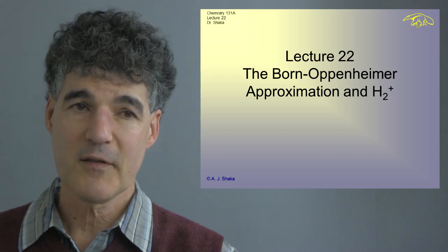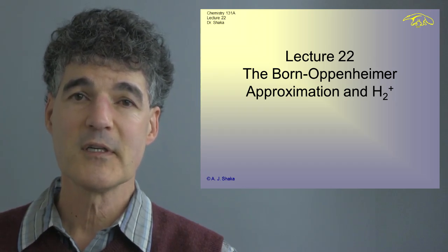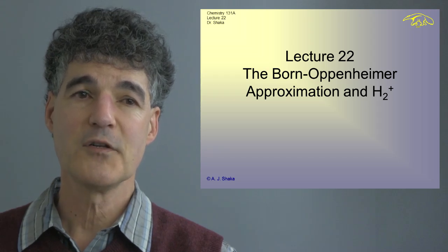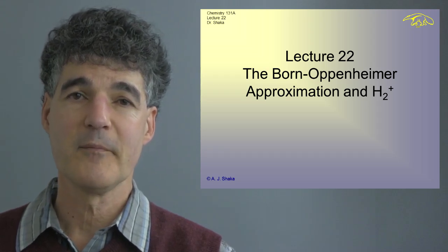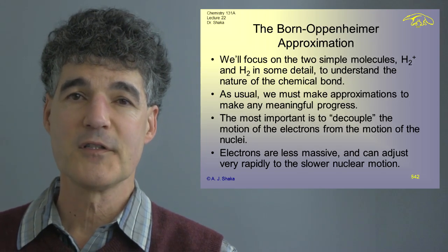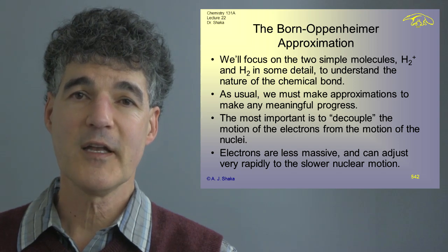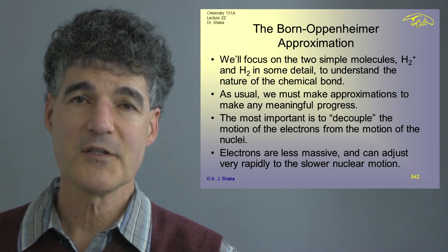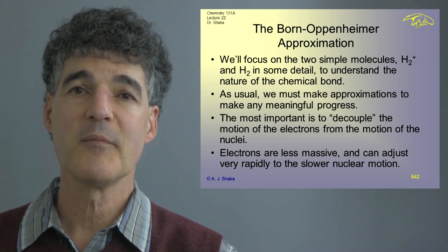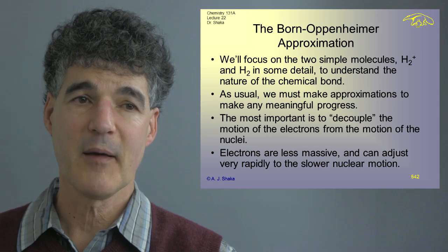After we talk about the Born-Oppenheimer approximation, we're going to introduce the simplest molecule H2 plus, and from there we'll go to H2. We're going to look at both of them in some detail to try to understand why it is that you can have a chemical bond.